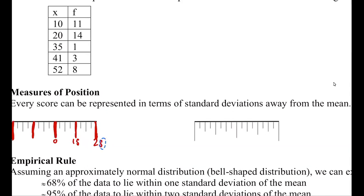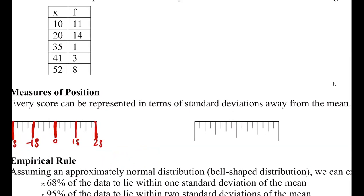I've had a number of people in the past that say, 'I understood everything — where did the 15, 25 come from?' So with a little bit of penmanship we can clear that up. I'm going to make it a little bigger so it's easier to see. This should be negative 2S and negative 1S. The middle one would really be 0S, but 0 times anything is 0, so I'll leave that as 0.